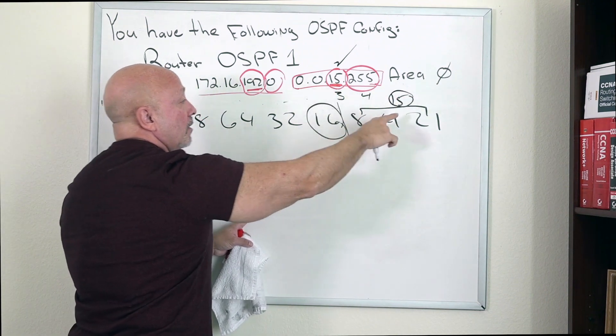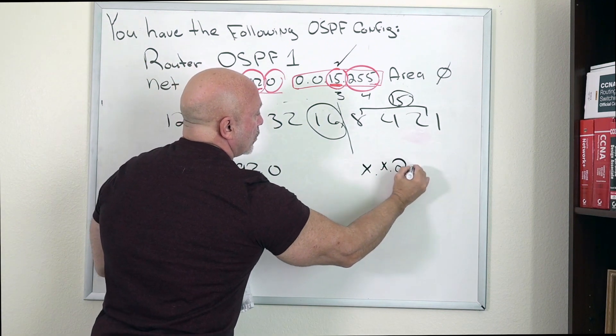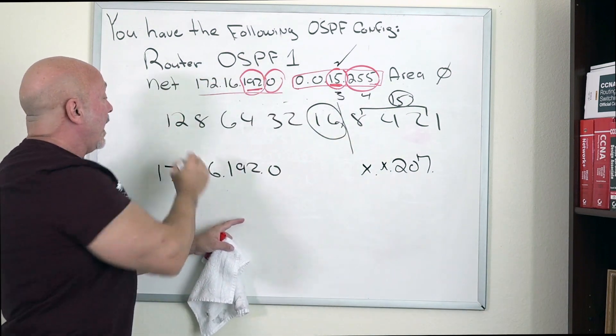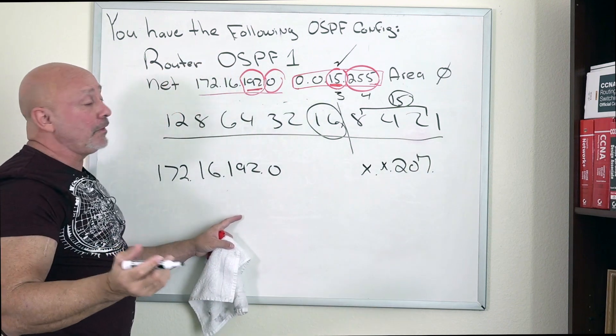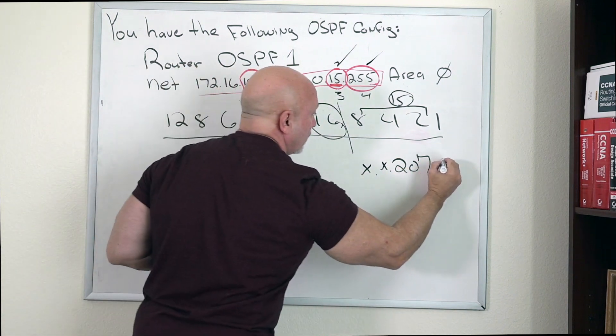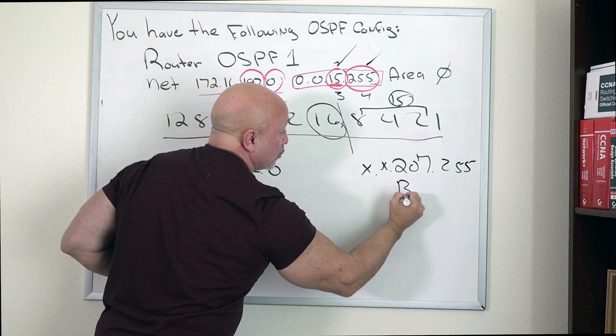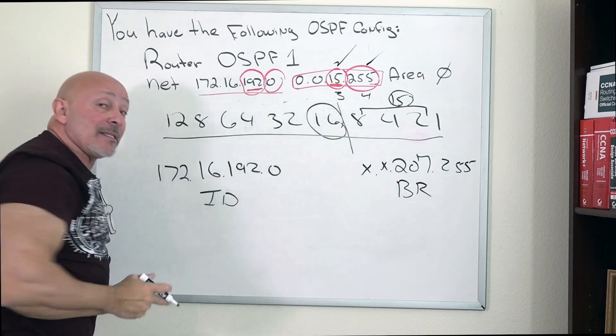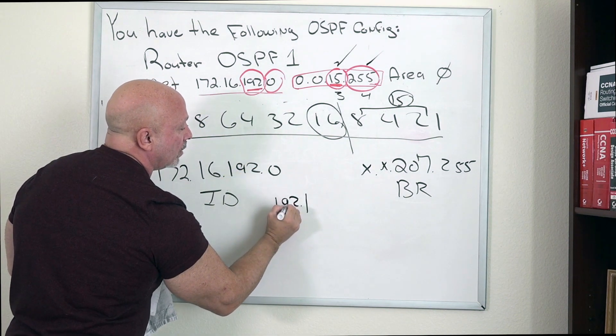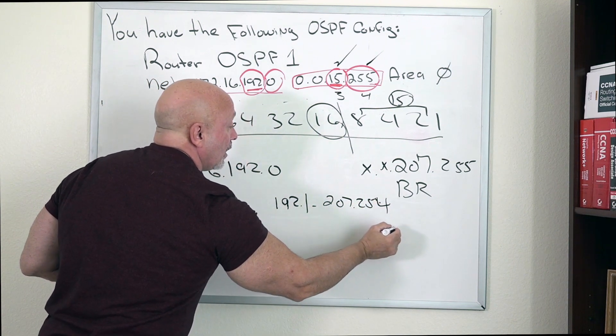15 on the third octet plus 192 gives you 207. On the fourth octet it's all zeros, so we add all these bit values which gives us 255. 255 plus zero is 255. That gives you your network ID, your broadcast, which is one of the answers. You cannot assign those two. Whatever is in this range from 192.1 all the way to 207.254 is what you can use.